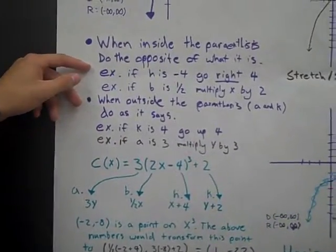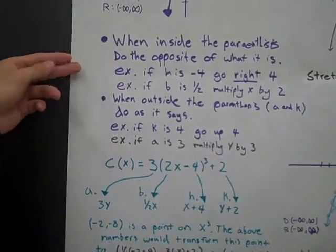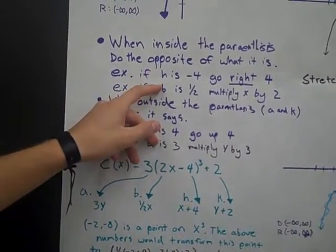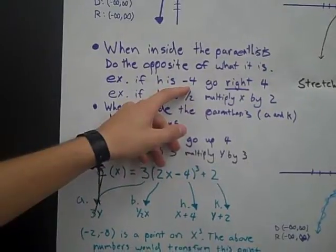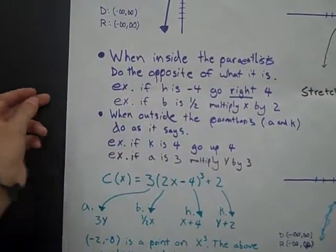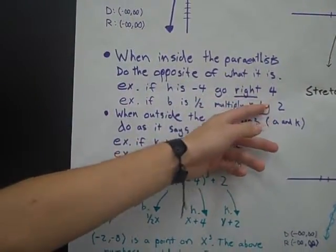When you're inside the parentheses, you always do the opposite of what it says. To explain this, if the h up there was a negative 4, then instead of going to the left 4 as you would think, you go to the right 4.